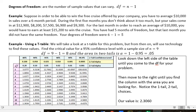It's hard to understand what that means, so I'll show you an example. Suppose in order to win a free cruise offered by your company, you have to average $10,000 in sales over a six-month period. During the first five months, you don't think about it too much, but your sales come in at $12,900, $8,200, $7,500, $6,900, and $9,300.